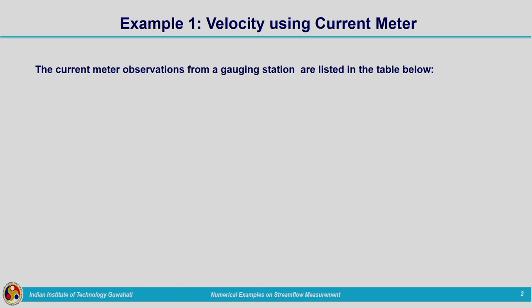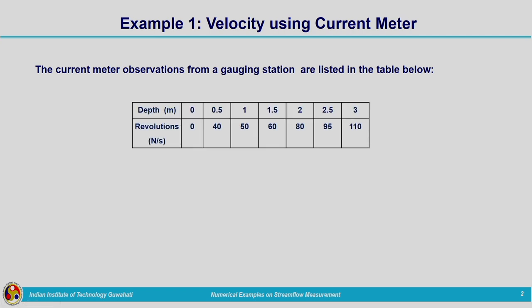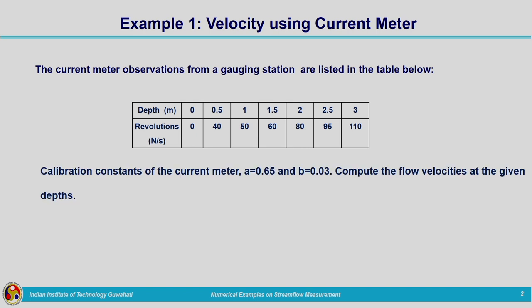The current meter observations from a gauging station are listed in the table below. Velocity measurements are carried out using a current meter at different depths varying from 0 to 3 meters. The revolutions recorded by the current meter are given as observations. These revolutions are per second. The calibration constants of the current meter are a = 0.65 and b = 0.03. Compute the flow velocities at the given depths.